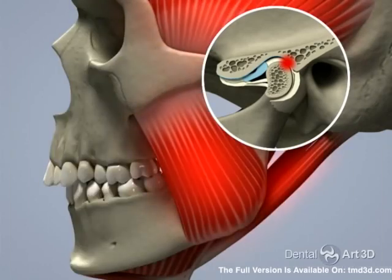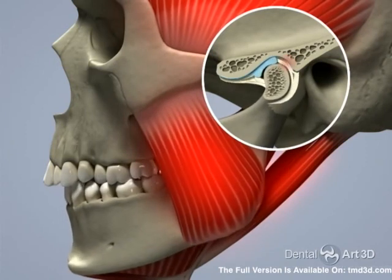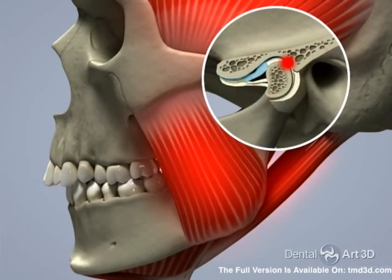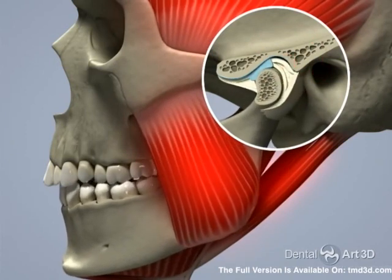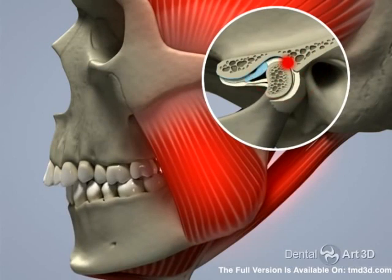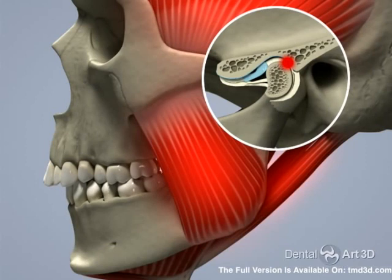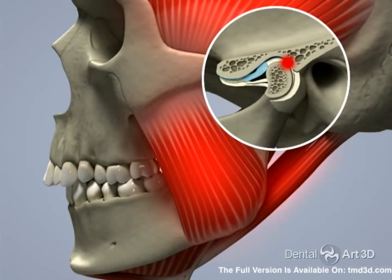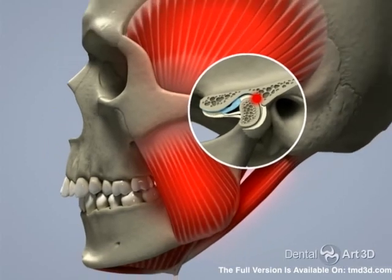This forces the TMJ condyle to shift distally while the TMJ disc shifts forward. Upon opening, the disc can shift onto the condyle to restore the TMJ's correct position — reduction of the disc — and then shift back to an incorrect forward position upon closing. This is what causes a reciprocal click.